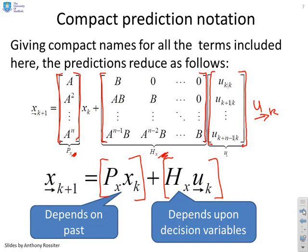And the other nice thing, of course, is that Hx depends solely on model parameters and the u future k is my decision variables. So I've got a very compact notation where I can see exactly what's going on.